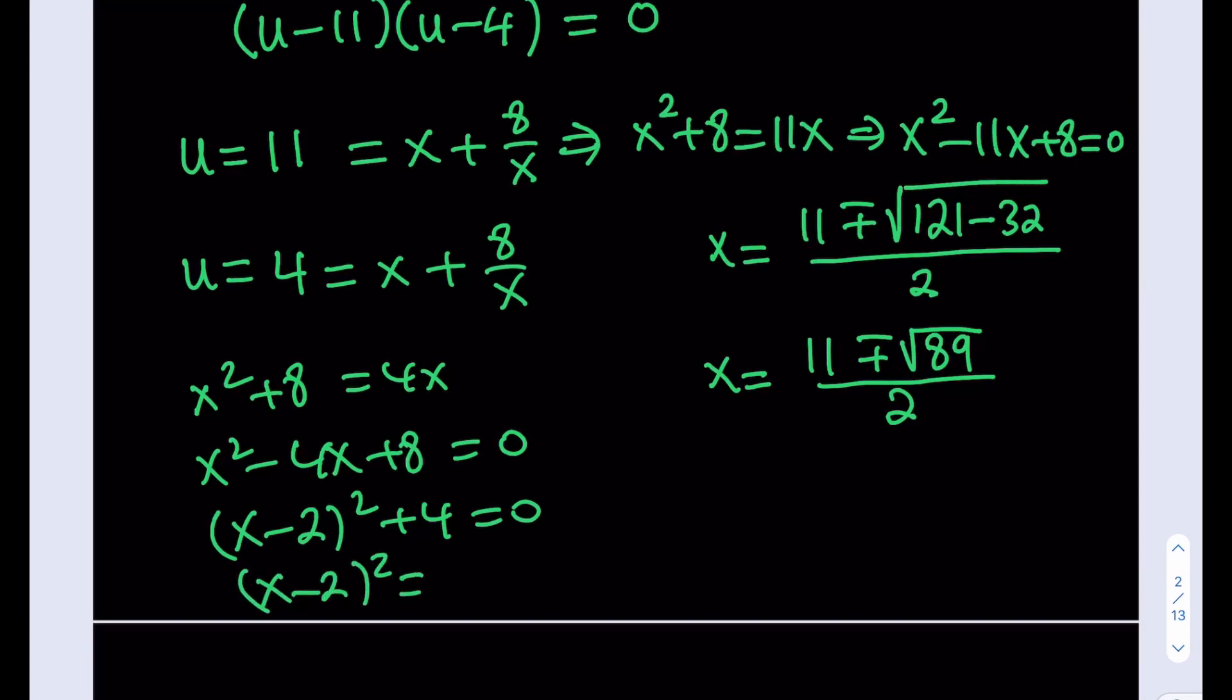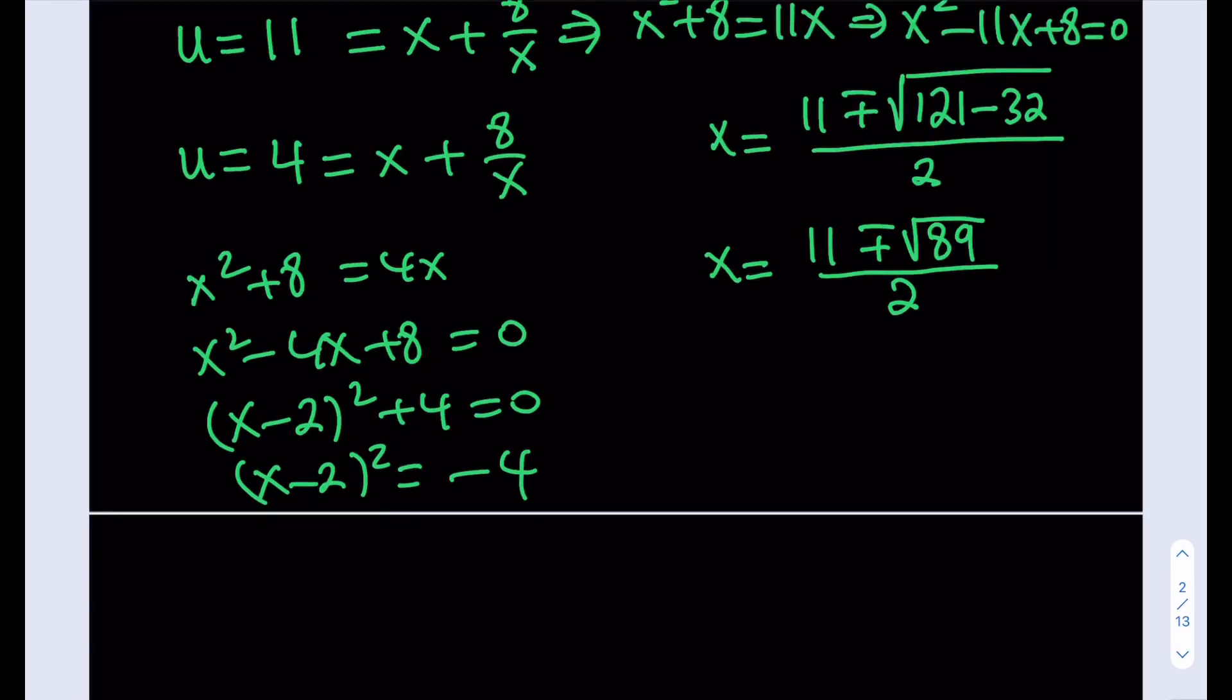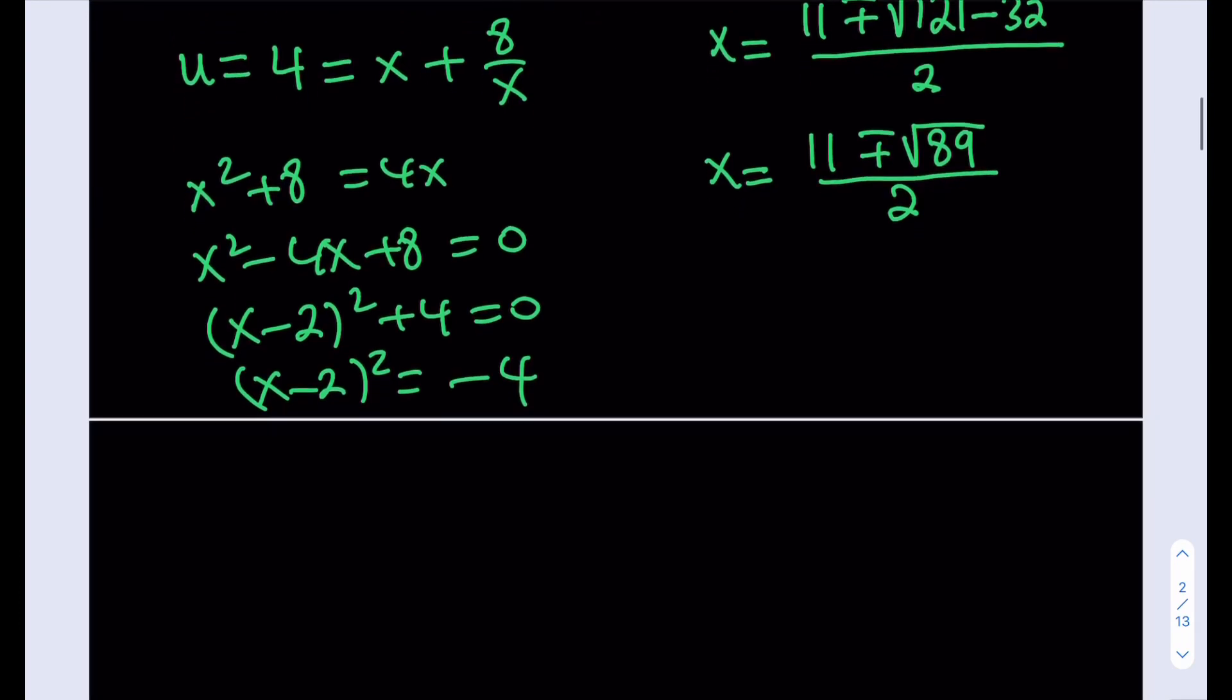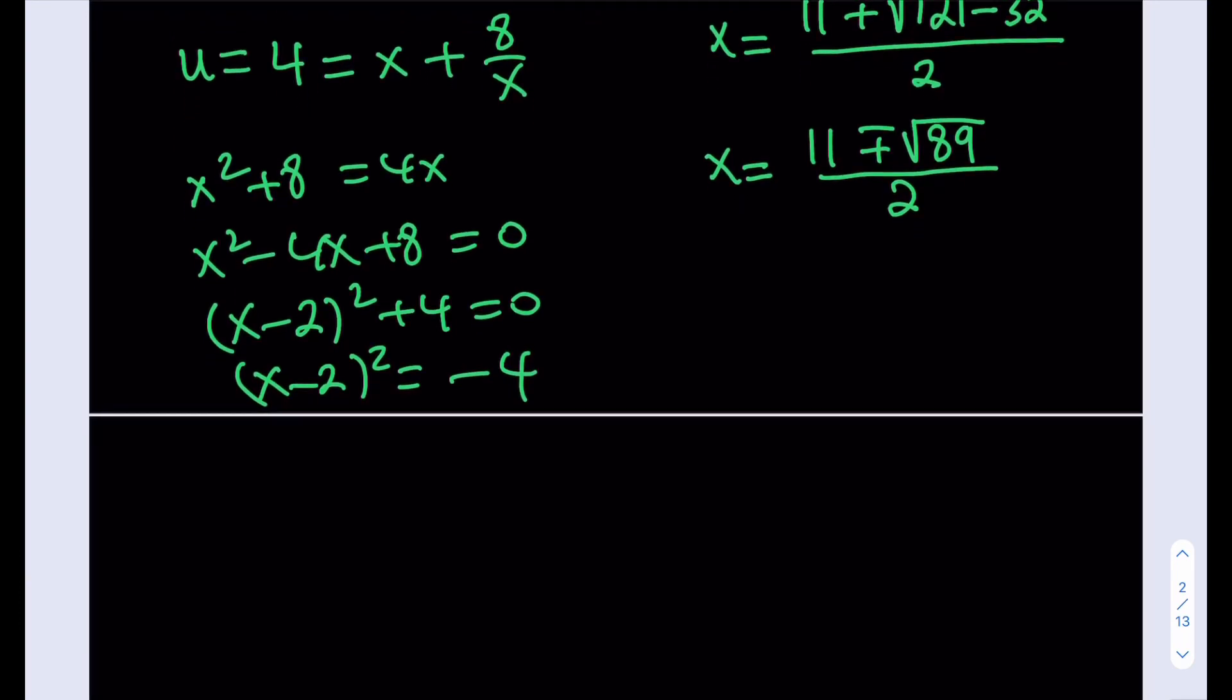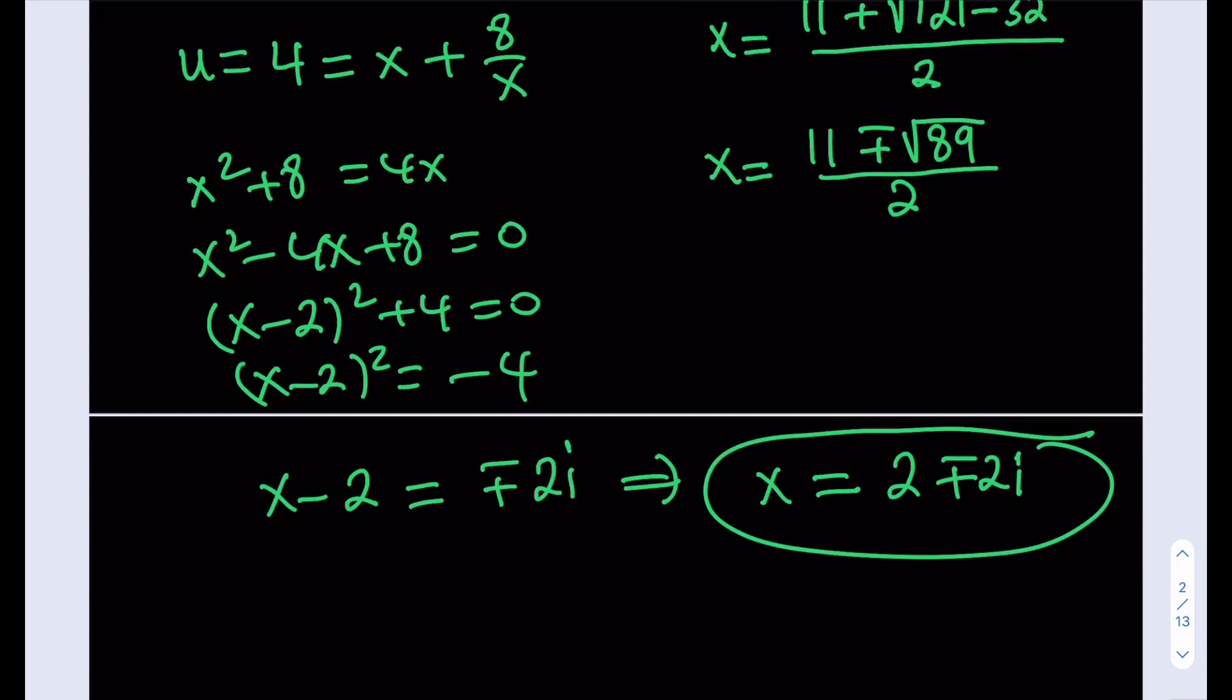We can actually find the complex solutions from here very easily. How do we find them? Well, you can kind of square root both sides and notice that the square root of negative 4 is 2i. So we're going to be getting x minus 2 being equal to plus minus 2i. And then, by adding 2 to both sides, we're going to get the other solutions which are complex. So this equation, being a quartic, has 4 solutions. 2 of them are real and 2 of them are complex.